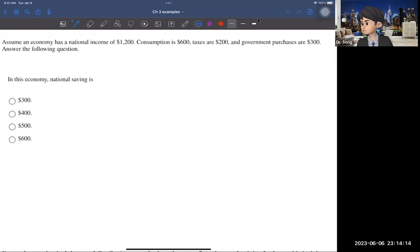An economy has a national income of $1,200, consumption is $600, and taxes are $200. So Y equals $1,200, consumption C is $600, and the tax is $200. And then the government purchase is $300. Given that, the question asks you to find the national saving.